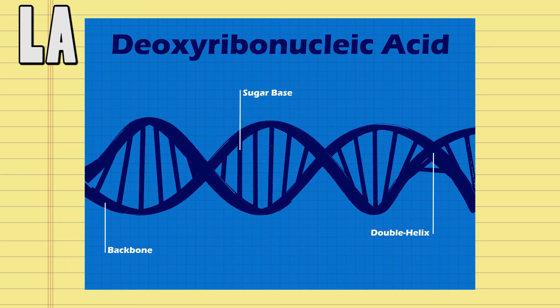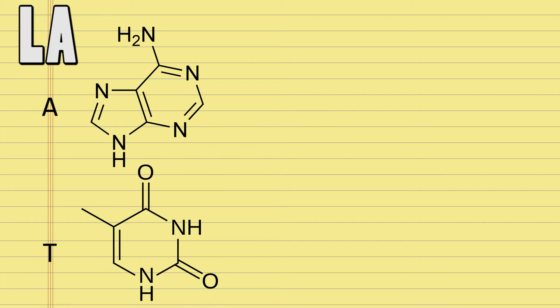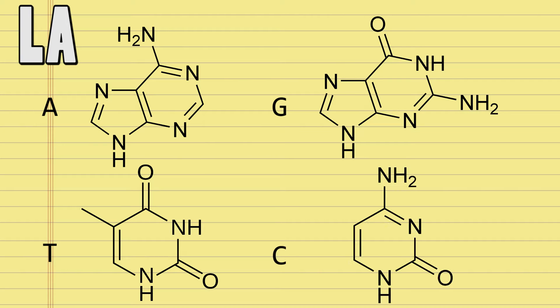Long answer: DNA is, simply put, the blueprints for life. It's what fundamentally makes you, well, you. It's a twin helix structure composed of four different sugar bases — adenine, which pairs with thymine, and guanine, which pairs with cytosine.